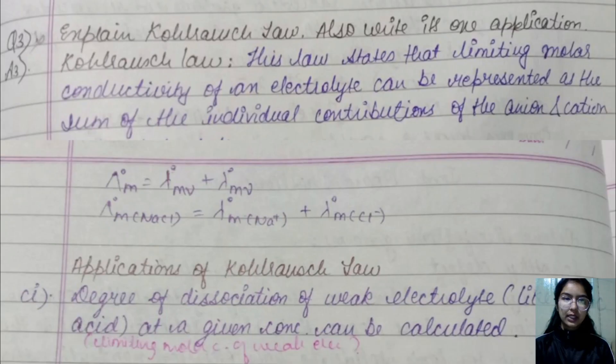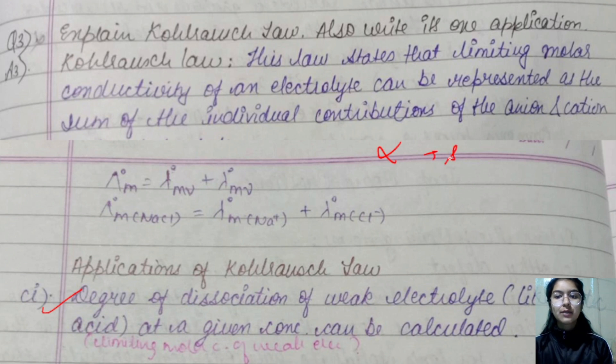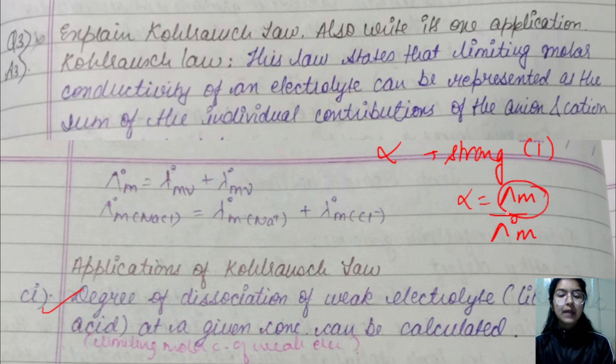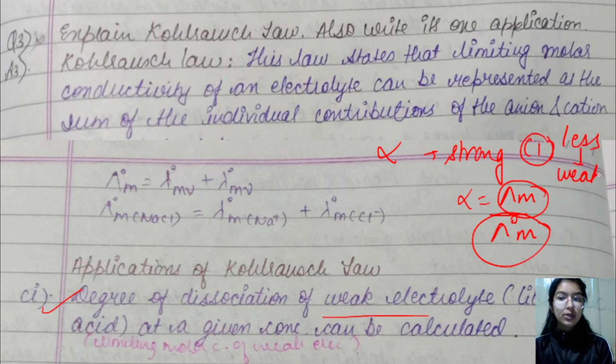The application is degree of dissociation alpha. If we talk about strong electrolytes, the value of alpha is almost equal to 1. Alpha is the degree of dissociation. The formula is lambda M upon lambda naught M. Lambda M is molar conductivity, and lambda naught M is limiting molar conductivity. So, degree of dissociation of weak electrolytes - for weak electrolytes, the value is less than 1.